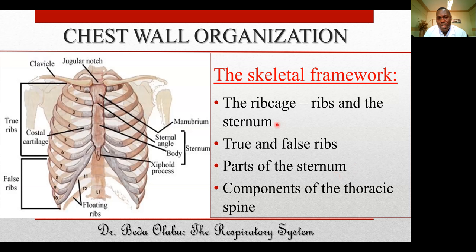Apart from the rib cage, the skeletal framework is also made up of the thoracic spine. The specific segment of the spine forming the chest cavity framework is the thoracic spine, which consists of vertebrae, intervertebral discs, and ligaments. There are 12 vertebrae named T1 up to T12.